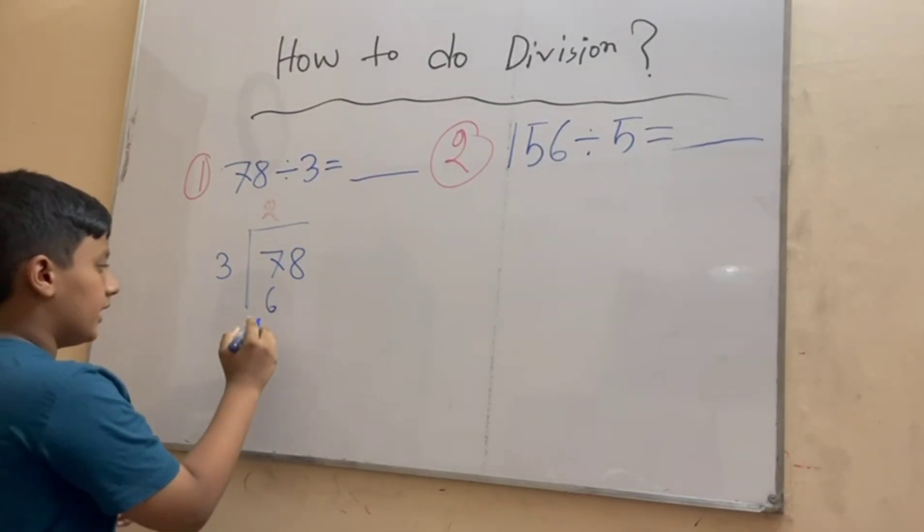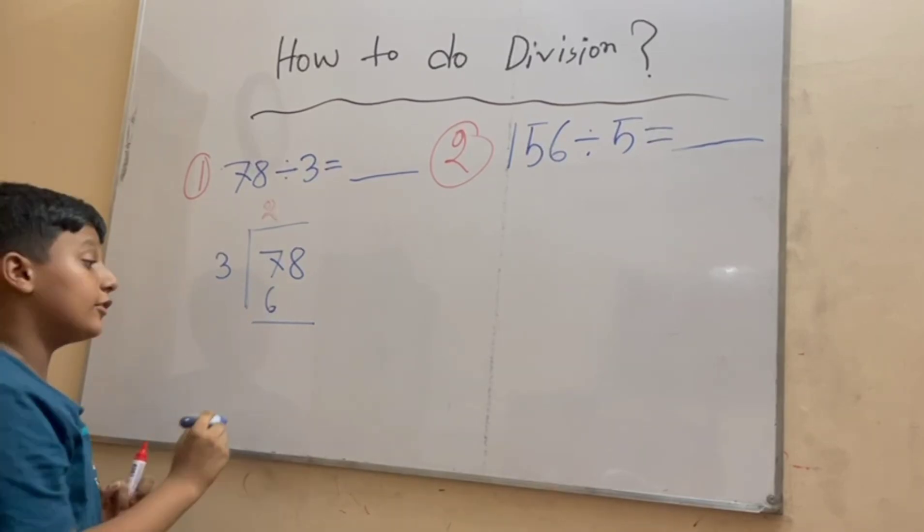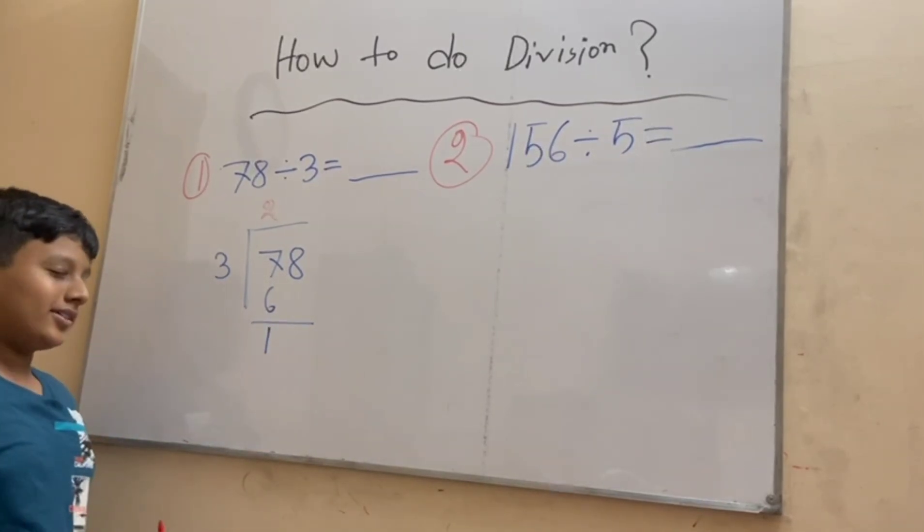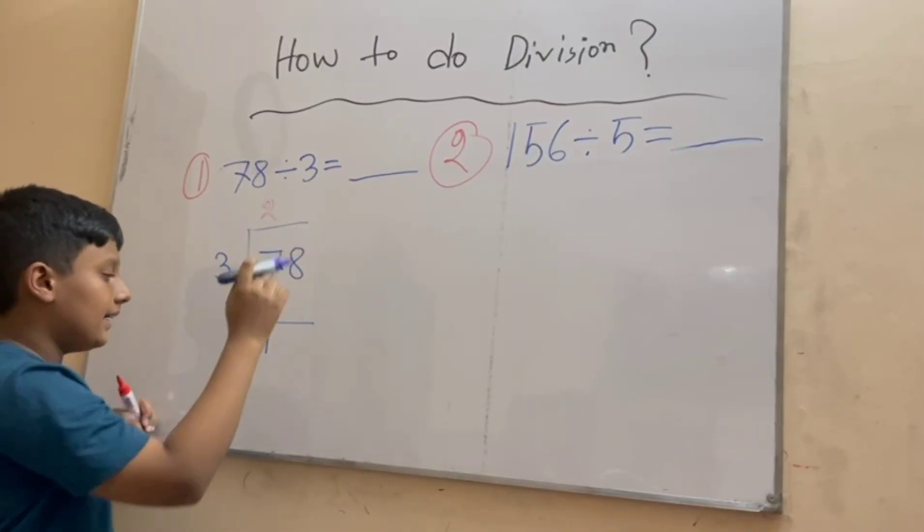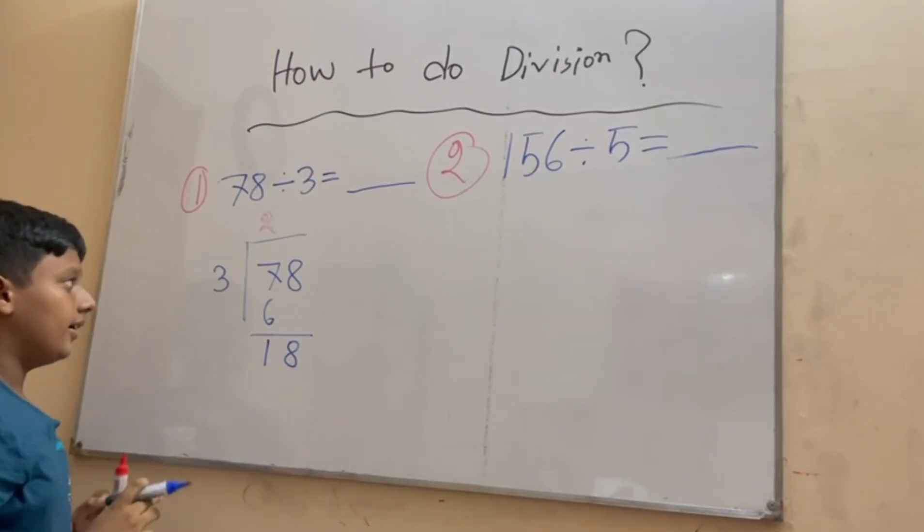Now we have to do subtraction: seven minus six is equal to one. Now another step is left. We have to bring this eight down so that we can do the proper division. So now again we have to do: how many times will it take for three to become almost eight?